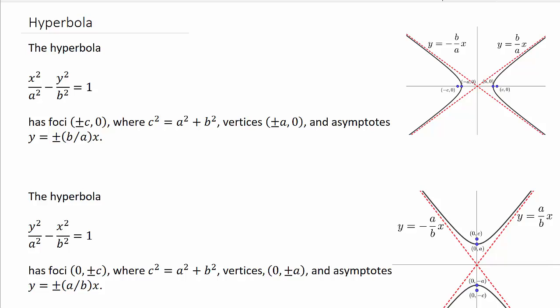Alright, so to find the equation of a hyperbola, we've got all this stuff here. Let's just get started on the first part of it. Hyperbola is going to be in this form here: X squared over A squared minus Y squared over B squared equals 1.